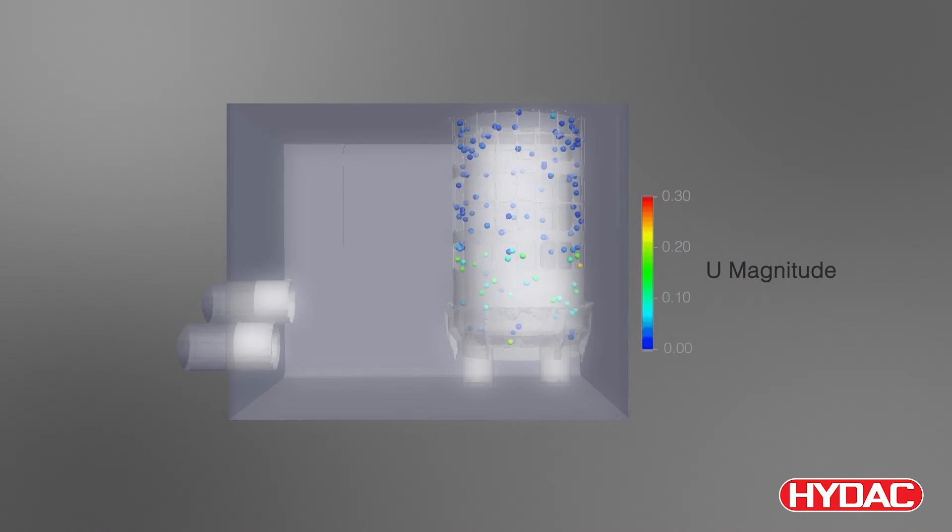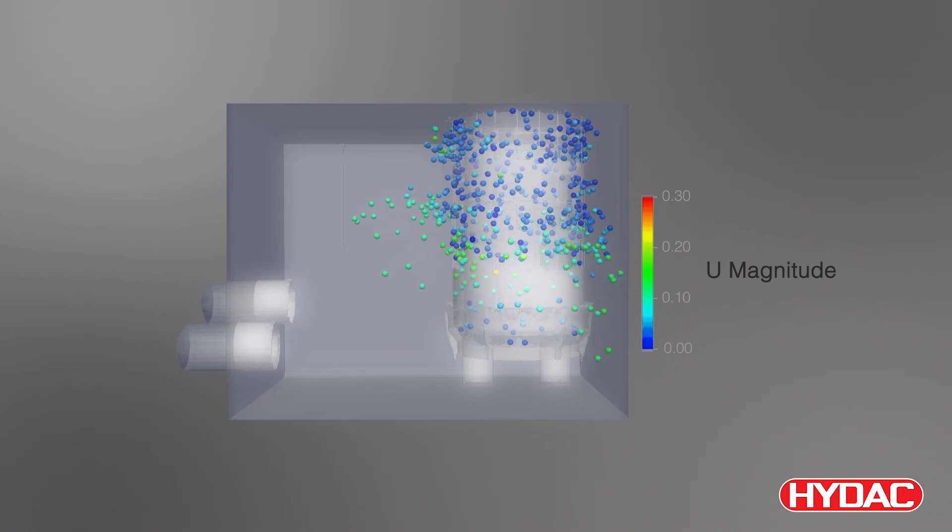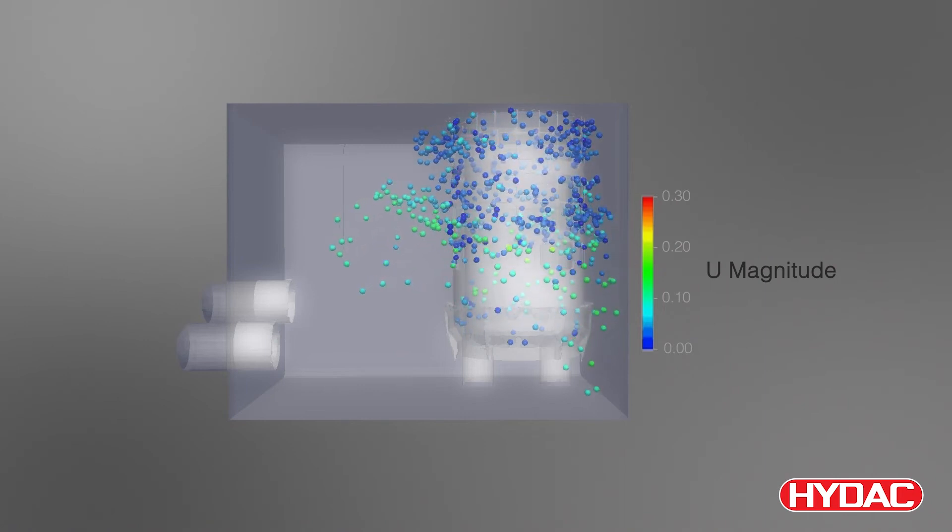The filter's large outlet surface area makes the oil flow out of the filter at a slower speed. This gives the air bubbles more time to rise to the surface, as shown in the simulation.